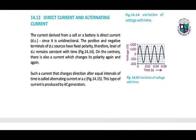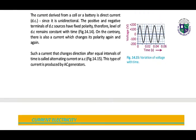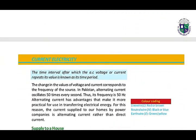What is direct and alternating current? The current derived from a cell or battery is direct current — it is unidirectional. The positive and negative terminals of direct current sources have fixed polarity, therefore the level of direct current remains constant with time. On the contrary, there is also a current which changes its polarity again and again. Such a current that changes direction after equal intervals of time is called alternating current. This type of current is produced by AC generators.